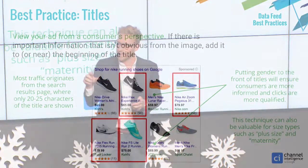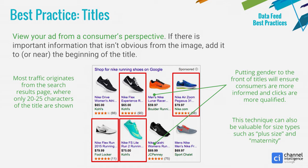It's really important to view your PLAs from the consumer's perspective. If there's an important piece of information that isn't obvious from the image, you should move that bit of information to the front or near the front of your title. Most traffic originates from the search results page, and you generally get three or maybe four words in your title before it gets cut off. For running shoes, for example, it's often really difficult to tell the gender of the shoe. So moving gender to the front ensures the person seeing the ad is far more informed, clicks are more qualified, and they're more likely to convert.